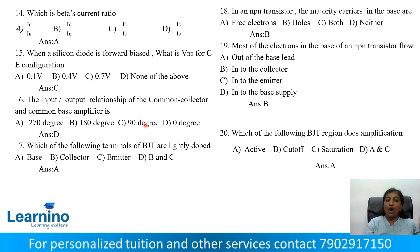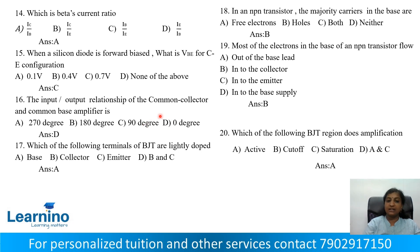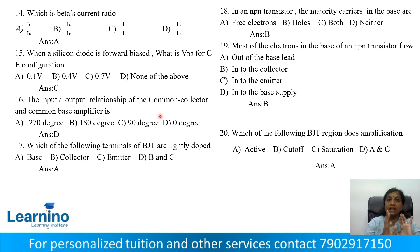Option D: 0 degree. For common collector and common base, input and output are in phase — 0 degree phase shift. In configurations — common collector, common base, common emitter — there are many parameters including input and output resistance relationships.